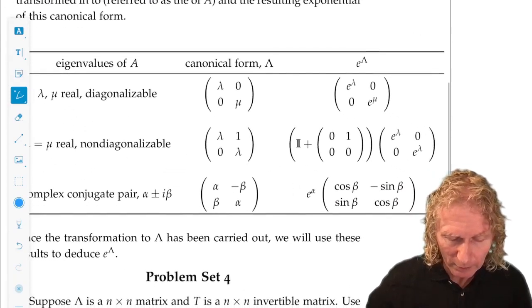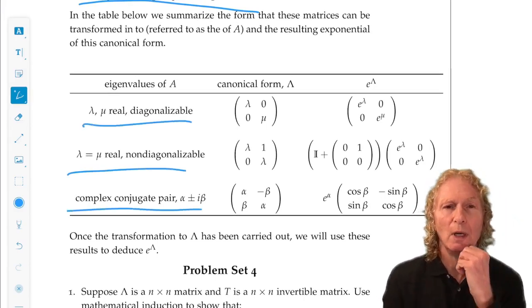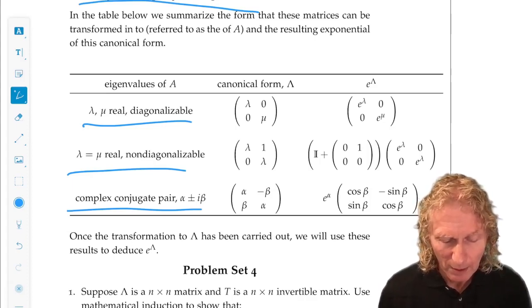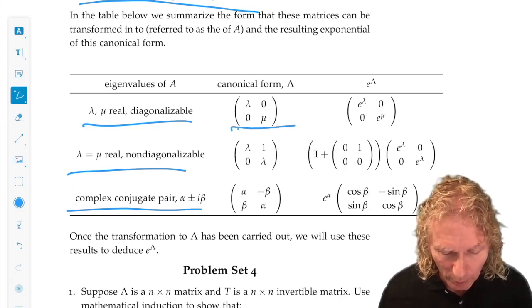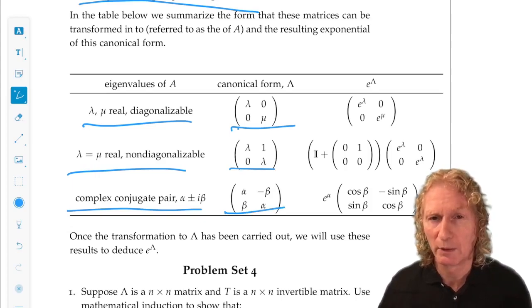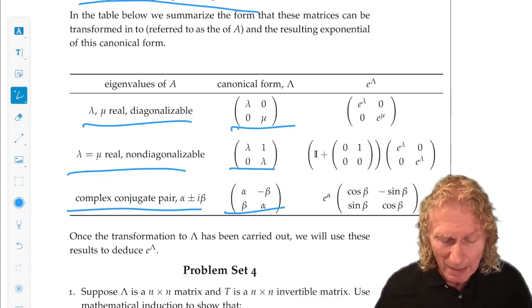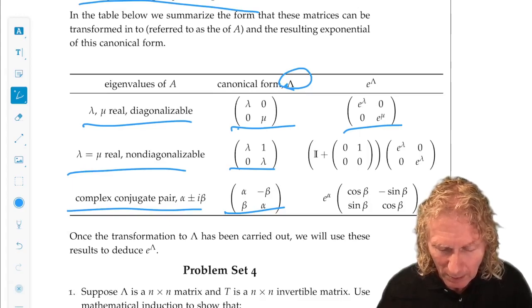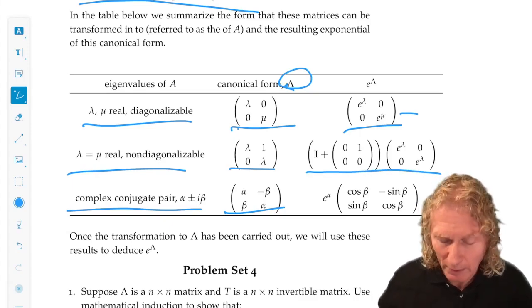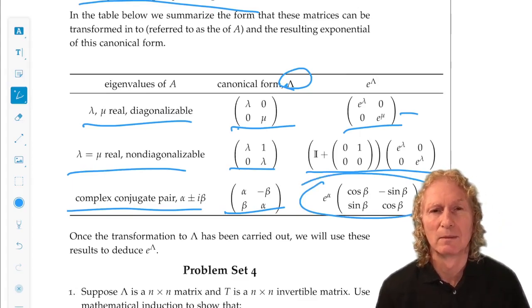So this little table shows you these three cases. For these three cases, the canonical form, the diagonalized form that you can put them in are these forms. And we'll see how this works in the next chapter. And e to the lambda for each of those. We know that if it's diagonal, it's going to look like that. If it's not diagonal, it's going to look like that. You just put it in the exponential series. And this last one is a bit more tricky.